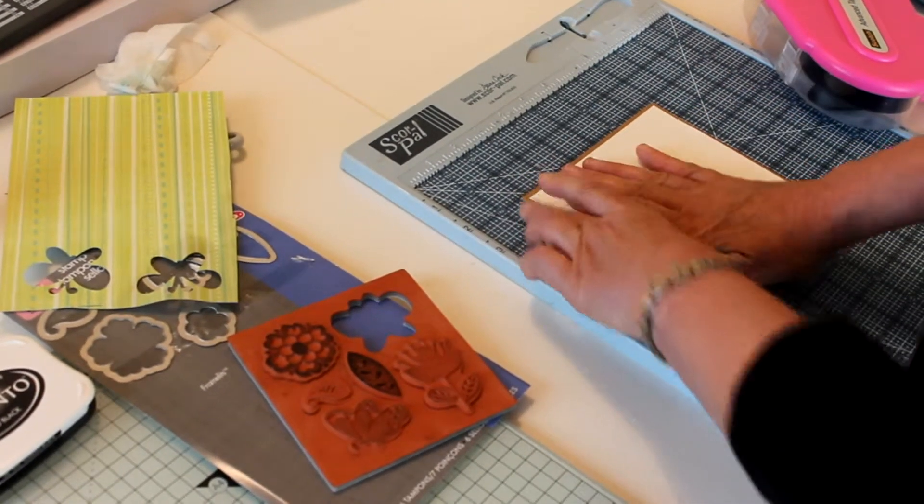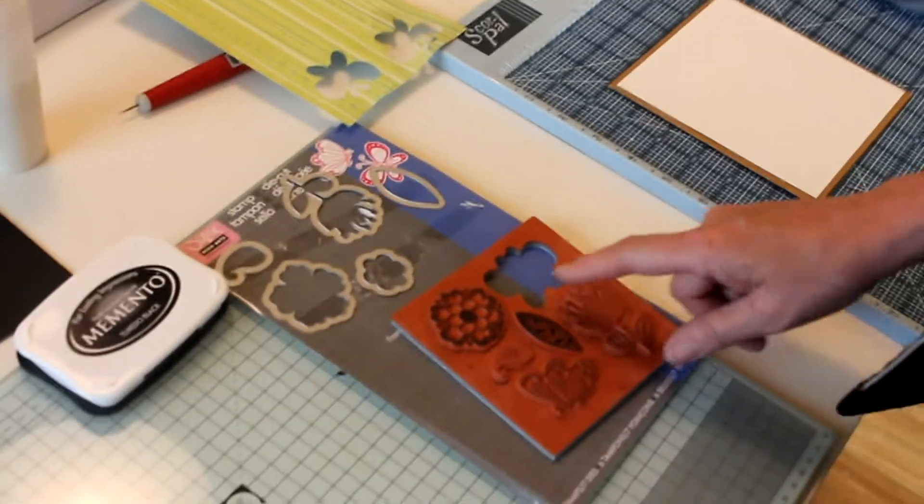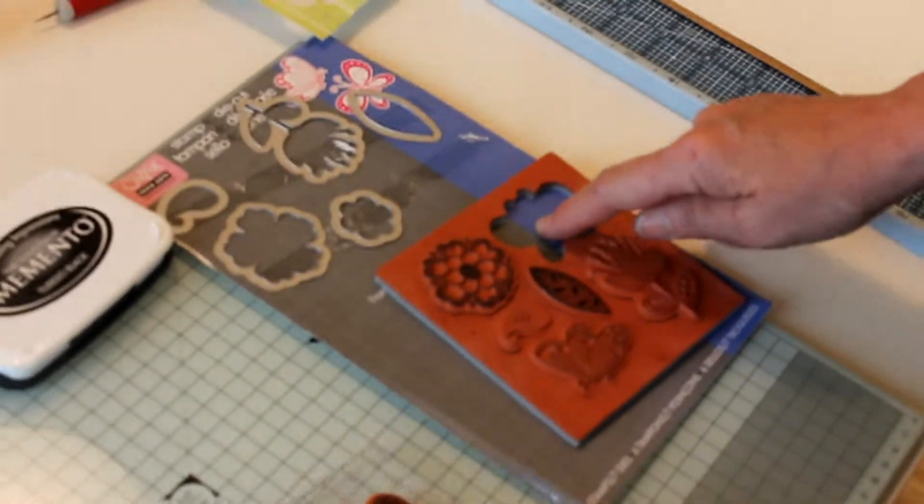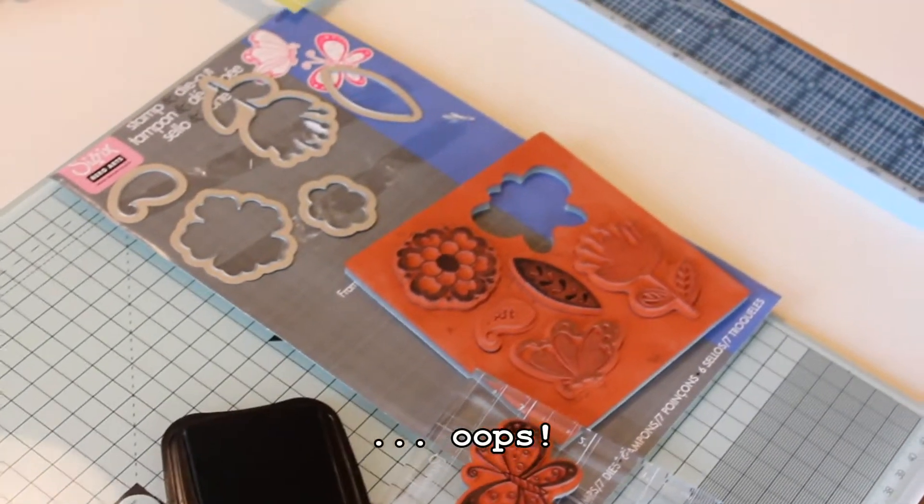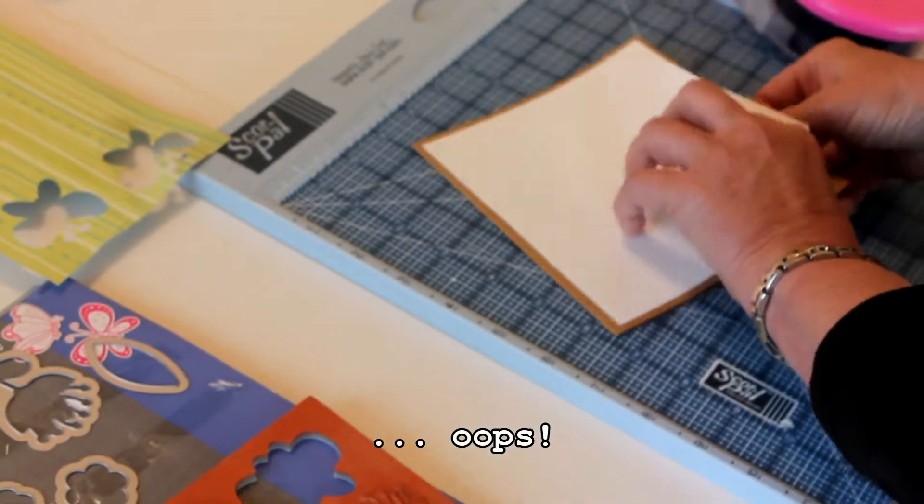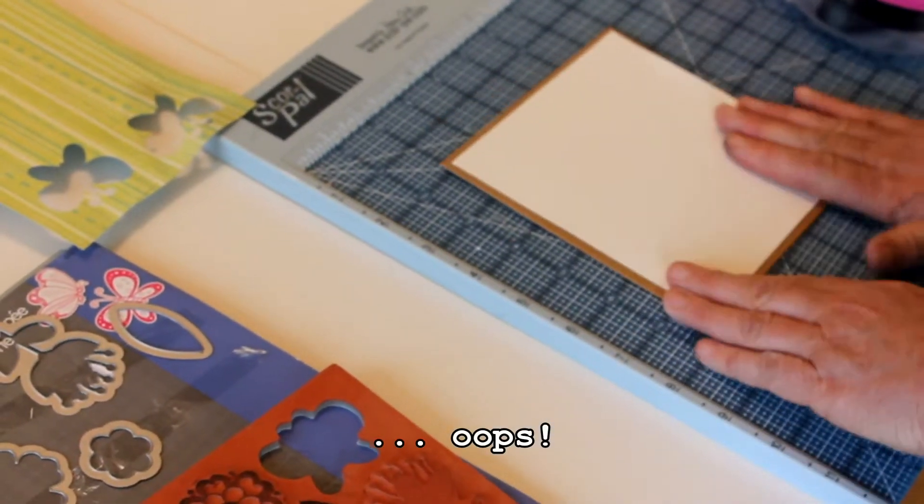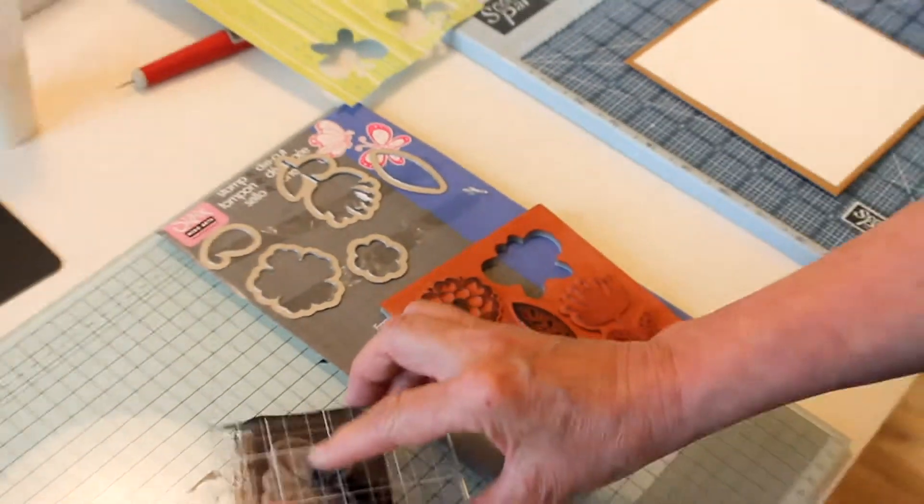Then I'm going to use this little scissor frame set and I'm going to take the butterfly from the set. I'm simply going to, oh I'm very crooked, okay well you can take your time at home and put it on nice and straight. I'm simply going to take my stamp.